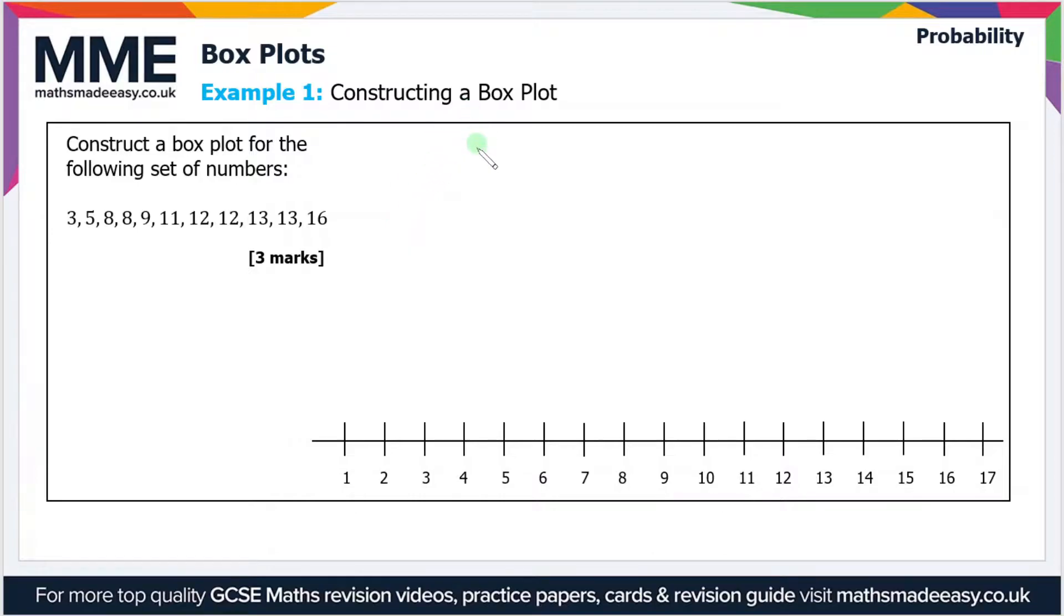Okay, well we'll start with the lowest and the highest values which form the edges of the box plot. So the lowest is 3 and the largest is 16, so we can mark the edges of the box plot at 3 and 16.